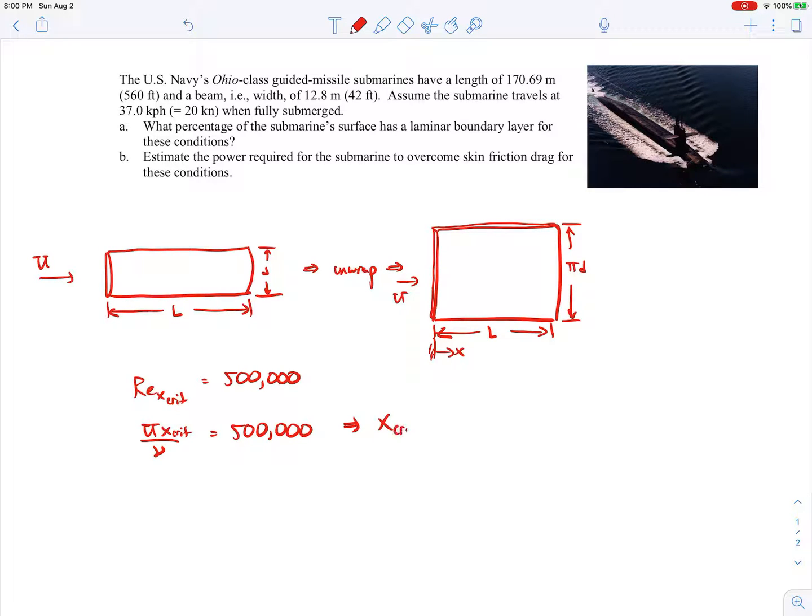So the critical distance from the leading edge will be 500,000 times the kinematic viscosity of seawater divided by the velocity U. So using some of the numbers here, the kinematic viscosity of seawater you can look this up in a table and it's 1.05 times 10 to the minus 6 meters squared per second. We said the velocity was given in the problem statement as 37 kilometers per hour, so you'd need to convert that over to meters per second. That comes out to be 10.3 meters per second. So when you work out the number for the critical distance, or the distance from the leading edge when we go from a laminar boundary layer to a turbulent boundary layer, that comes out to be 5.1 centimeters.